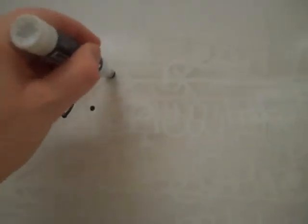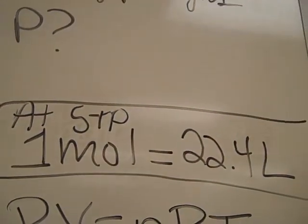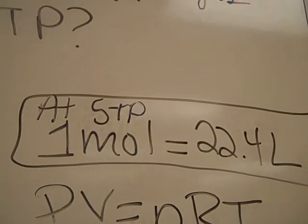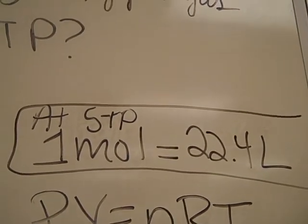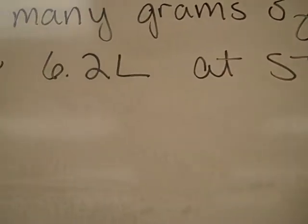Now let's do that shortcut. We have 6.2 liters. And we have the fact that at STP, one mole of any gas is equal to 22.4 liters. Whenever I see an equal sign, I'm thinking of a fraction, a conversion factor. And I never start with conversion factors. So I'm going to start with my 6.2 liters.